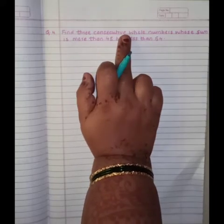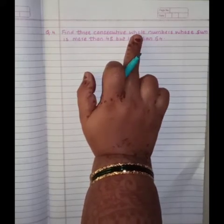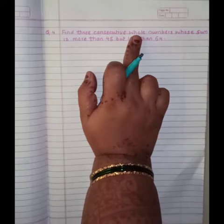Now students, what is meant by consecutive whole number? All you know that whole number starts from 1, 1 to infinite.